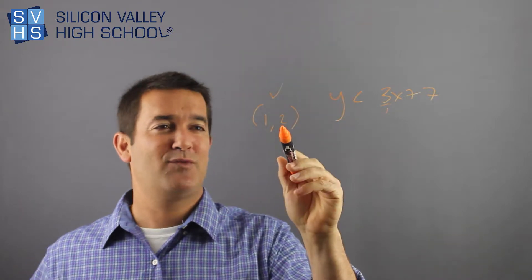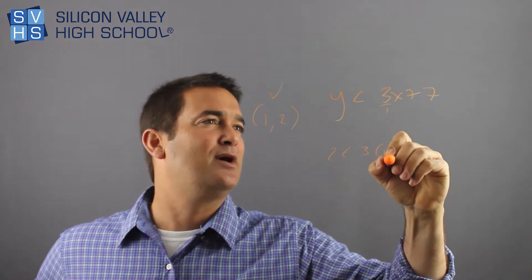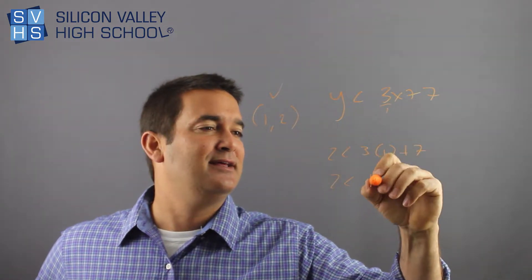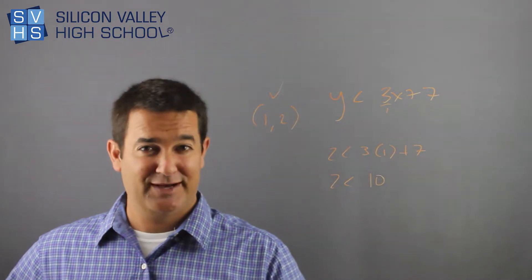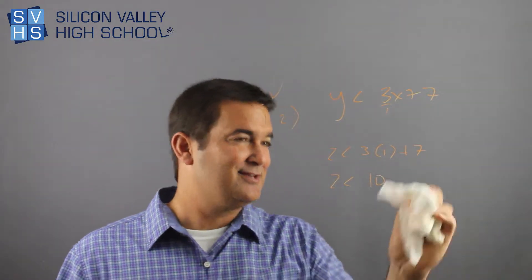So let's do that. Let's put 2 in for y and 1 in for x. 2 is less than 3 times 1 plus 7. Is 2 less than 10? Yes, that is a factual statement, so yes, this point does work for that inequality. So that's how you do these.